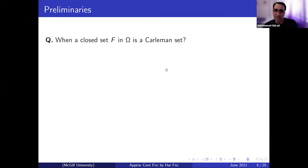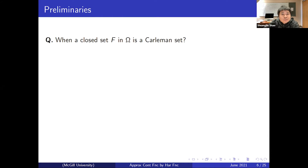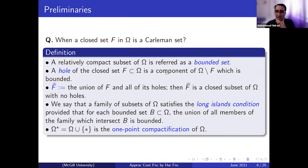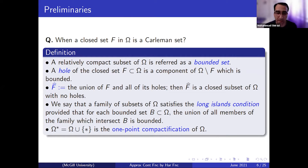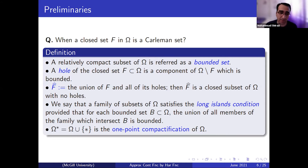Characterizing Carleman sets is not an easy task, so I will give you just one theorem that characterizes, in some way, Carleman sets of a Riemannian manifold. To understand the theorem, I need to present some definitions. When I say a bounded set in Ω — remember Ω is a Riemannian manifold — I mean a relatively compact subset. What is a hole? Intuitively, it's just the hole as we see it, but mathematically, it's every component of the complement that is also a bounded set.